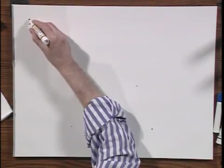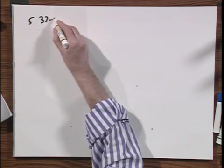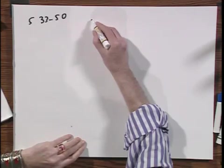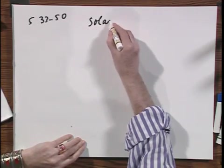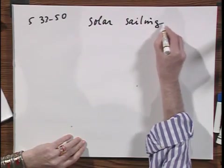This brings us to problem number five, problem 3350. And now we're going to do some science fiction, we're going to do solar sailing.